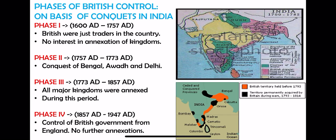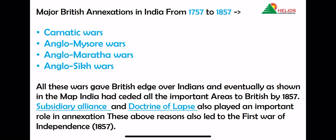To repeat: total 1600 to 1947, divided into 4 phases. 1600 to 1757 — no annexation. 1757 to 1773 — conquest of Awadh, Delhi and Bengal (Awadh is modern-day Lucknow). Phase 3 — major kingdoms like Mysore, Maratha, and Karnatic — all major annexations were made in Phase 3. Phase 4 — no annexations were made in India. The major annexations in Phase 3 were the Carnatic Wars, Anglo-Mysore War, Anglo-Maratha War, and Anglo-Sikh War, and in all three wars the British were victorious.